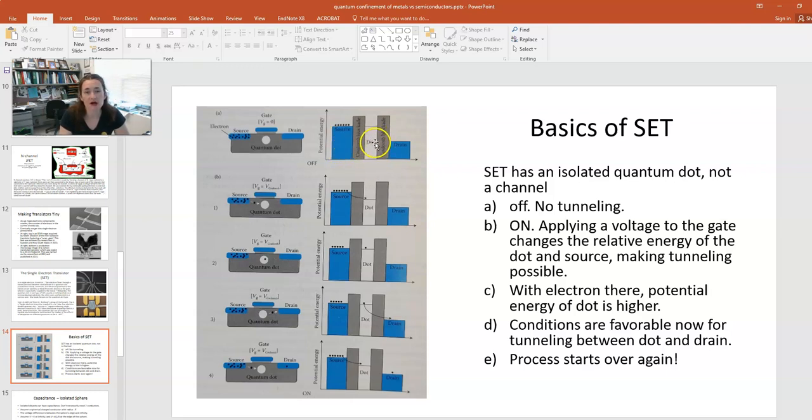But you can see that the energy between the source and the dot is comparable, so their potential energies are comparable. Now in order for tunneling to be possible, the energy in the dot must be lower than the energy in the source. So how do you achieve that? Well, if you apply a voltage to your gate,